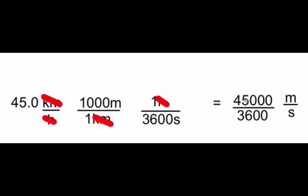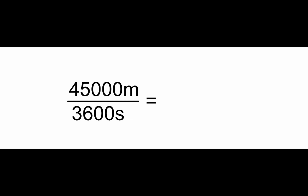And when I do the math, I end up getting 45,000 divided by 3,600. So now we've got 45,000 meters divided by 3,600 seconds. We use a calculator, we do the division, and we end up getting a number of 12.5, and because we have meters on the top and seconds on the bottom, we will have meters per second.